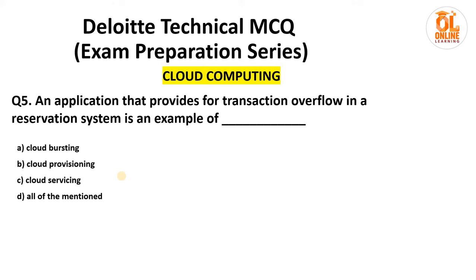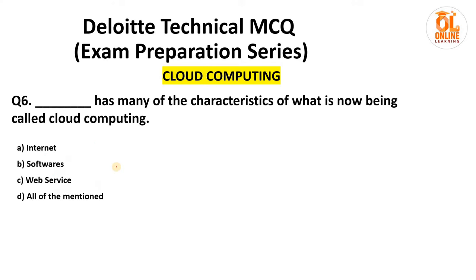Next question: an application that provides transaction overflow and reservation systems is an example of cloud bursting. I recommend going through each and every terminology here to understand. Similarly in cybersecurity there are terminology lists. Note down such terminologies or take a screenshot, browse these keywords — that will help you answer these questions.